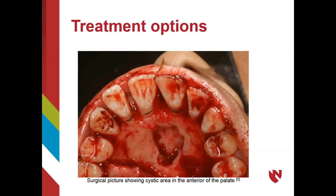Here is a post-op picture of the anterior maxillary palate showing the excision of a nasal palatine duct cyst. A definitive diagnosis was made through radiographic interpretation, which involved a round radiolucency greater than 6 millimeters between tooth number 8 and 9. The nasal palatine duct cyst is not a very common cyst and rarely occurs with pain and swelling, but can cause structural displacement if allowed to get large enough. A differential diagnosis for an NDC includes enlarged incisive canals, radicular cysts, and a nasolabial cyst. Thank you for watching our presentation.